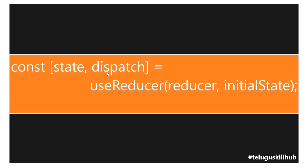That's it guys. So to summarize: reducer, dispatch, action. When you dispatch an action, it goes to the reducer, which modifies the state value and returns it.